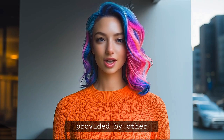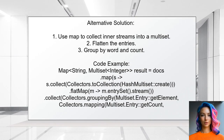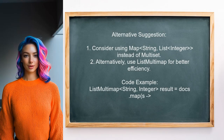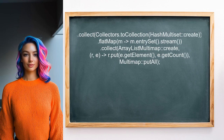Now let's look at the answers provided by other users. An alternative approach involves using the map function to collect each inner stream into a multiset, then flattening the entries and grouping them by word to create a map of words to their counts. This captures the frequency of each word across the documents. The user also notes that a multiset may not be necessary for storing counts — they suggest using a list instead, or leveraging Guava's ListMultimap for a more efficient structure.